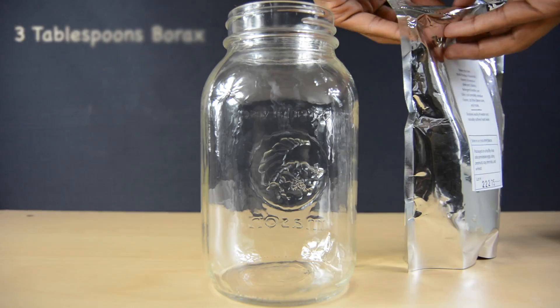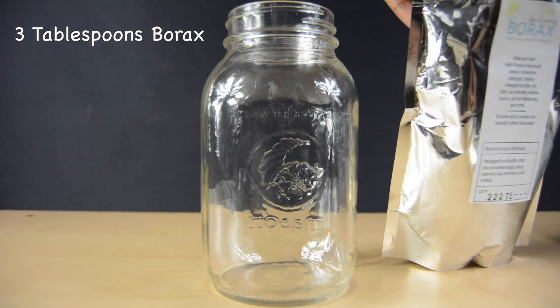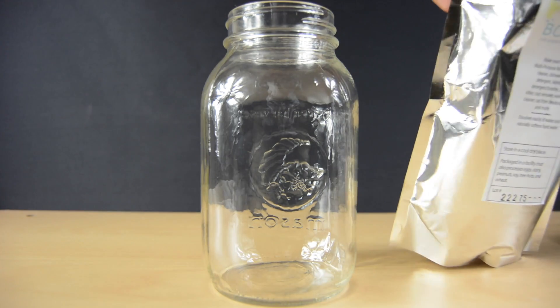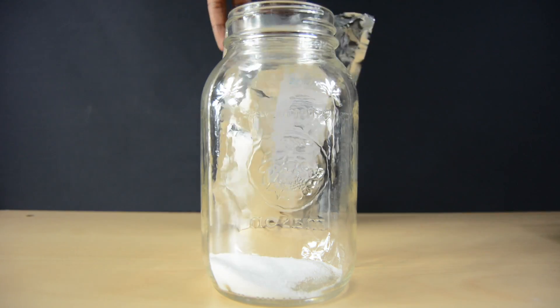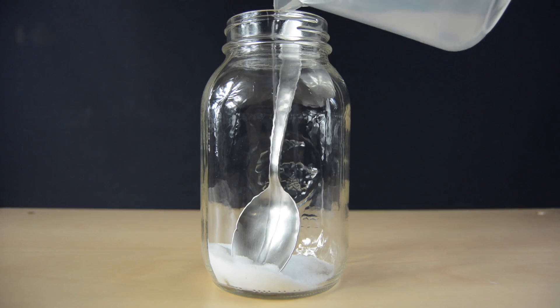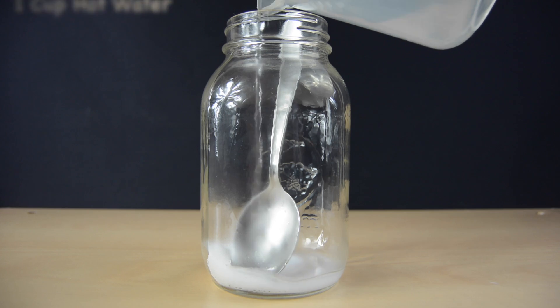Afterwards go ahead and start working on your solution. For your solution you're gonna need three tablespoons of borax for every one cup of hot water. The hot water is pretty important because it'll make your life a whole lot easier when you're dissolving the borax.